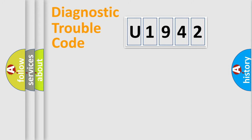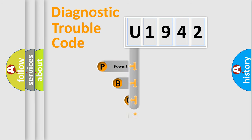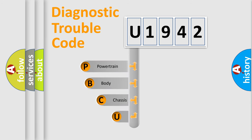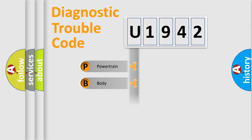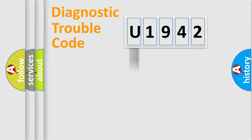Let's do this. First, let's look at the history of diagnostic fault code composition according to the OBD-II protocol, which is unified for all automakers since 2000. We divide the electric system of automobile into four basic units: Powertrain, Body, Chassis, and Network.